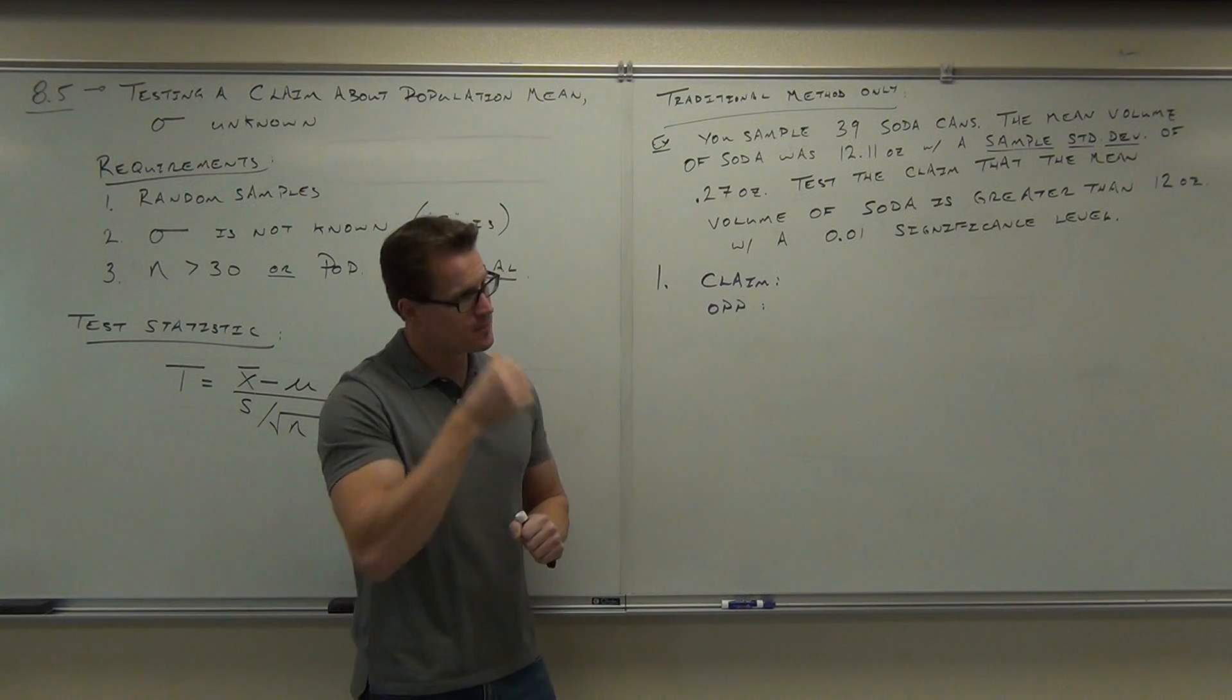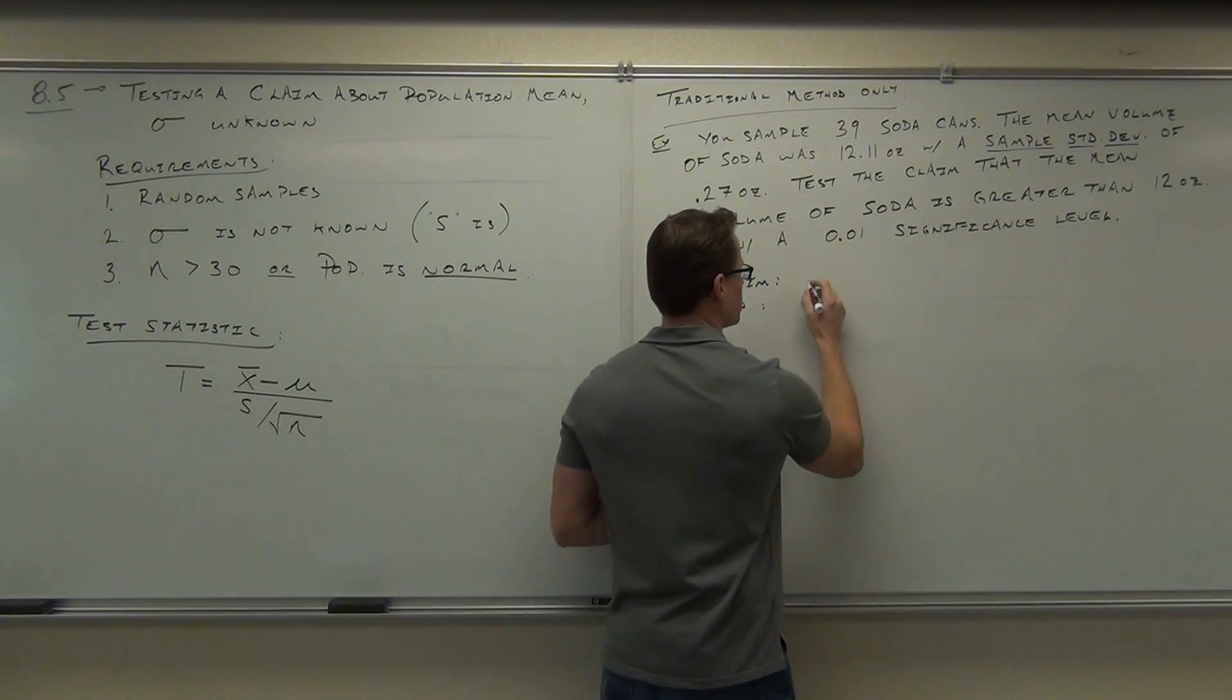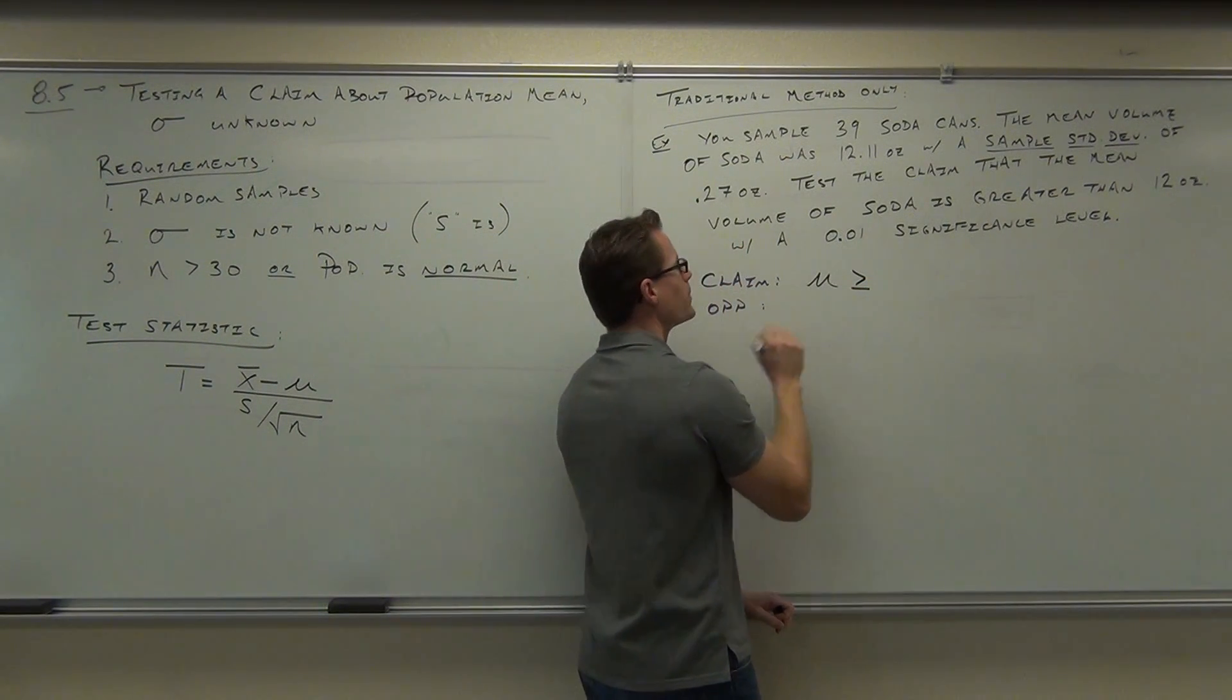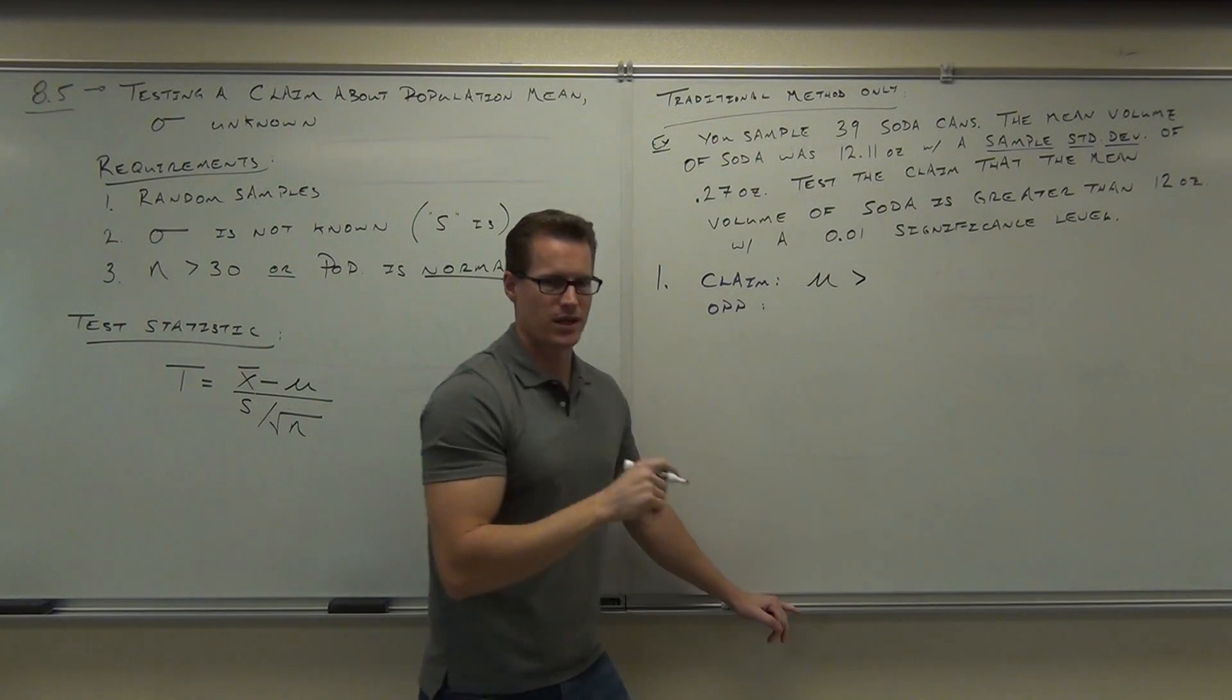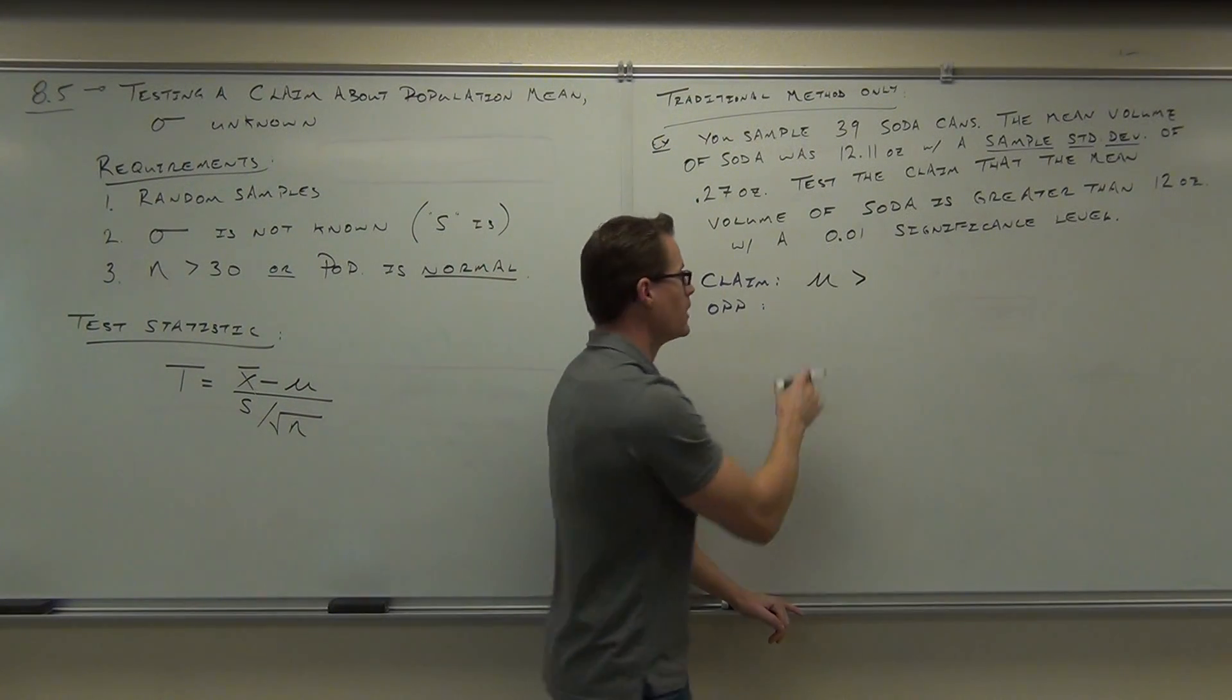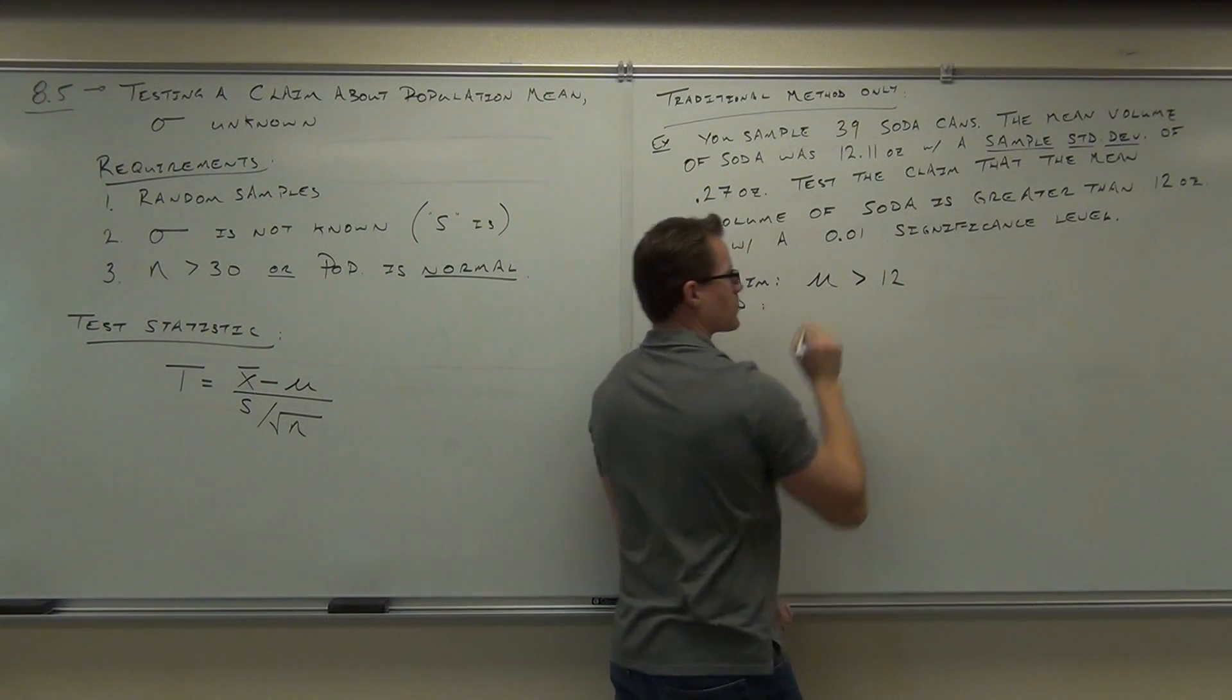What's our claim? Definitely mu, not p, right? I'm not talking about the proportion. Definitely mu. Greater than is this one or this one? That's greater than. So the equal, that's important, right? Because that dictates where our null hypothesis is at. That's a big thing. We have to get that right. So mu is greater than 12. When it says test the claim, that's where we're getting our claim. Greater than 12 ounces.